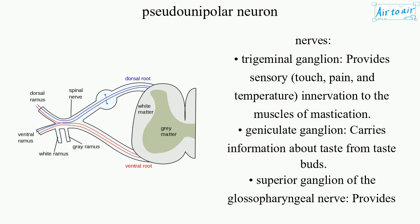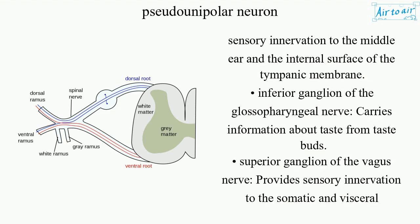Geniculate ganglion — carries information about taste from taste buds. Superior ganglion of the glossopharyngeal nerve — provides sensory innervation to the middle ear and the internal surface of the tympanic membrane. Inferior ganglion of the glossopharyngeal nerve — carries information about taste from taste buds.